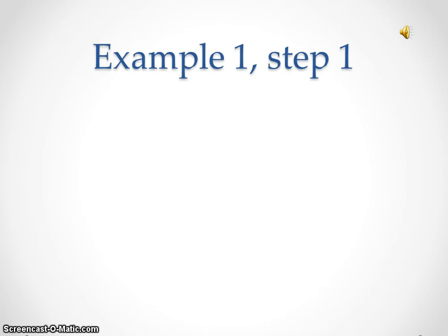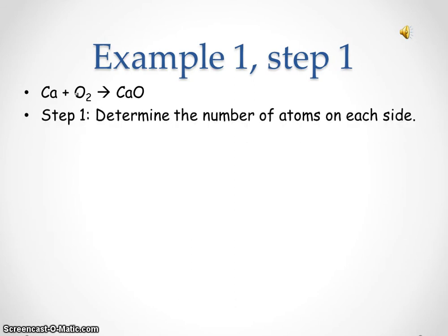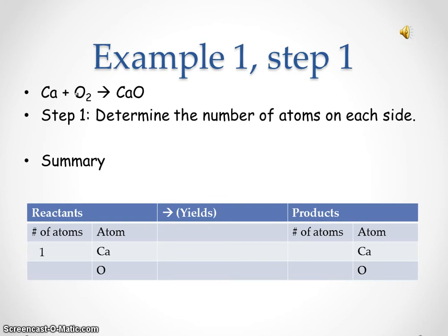Example one, step one. We have calcium plus oxygen yielding calcium oxide. Step one: determine the number of atoms on each side. On the reactant side, we have one calcium and two oxygen. On the product side, we have one calcium and one oxygen.